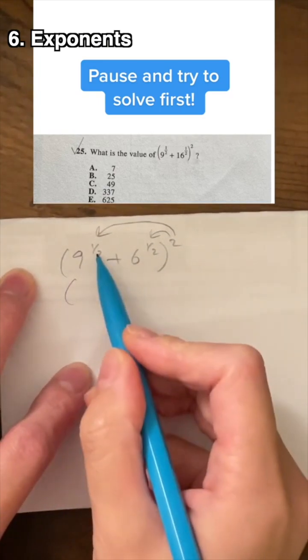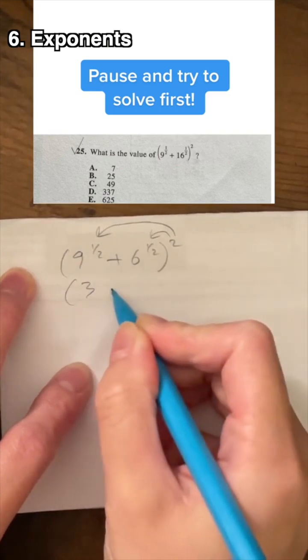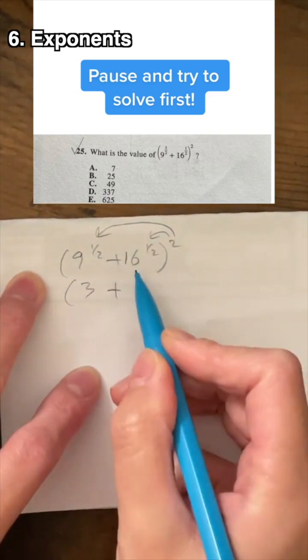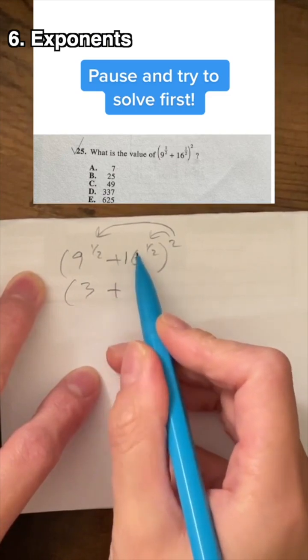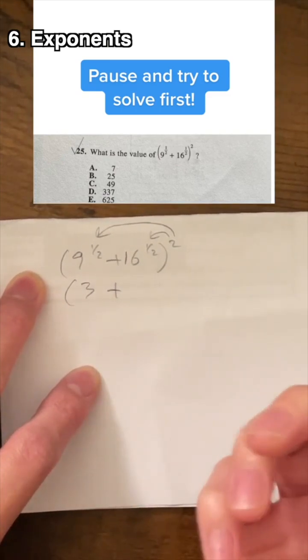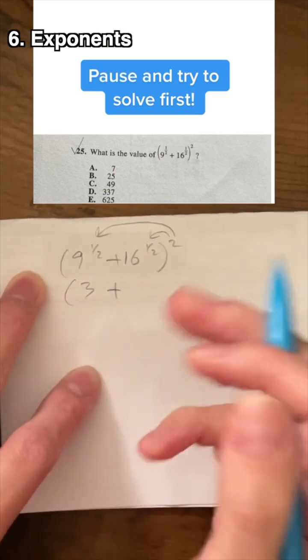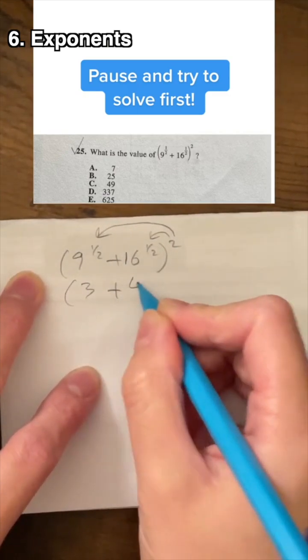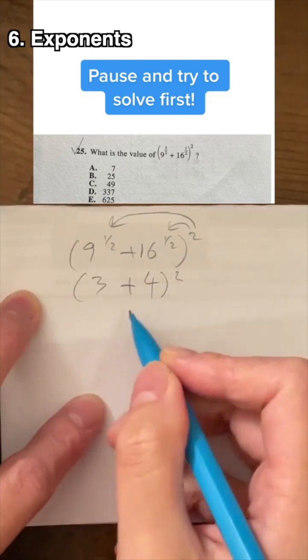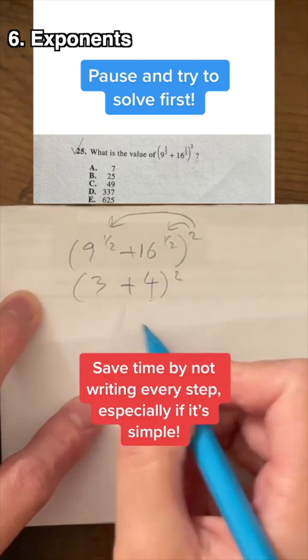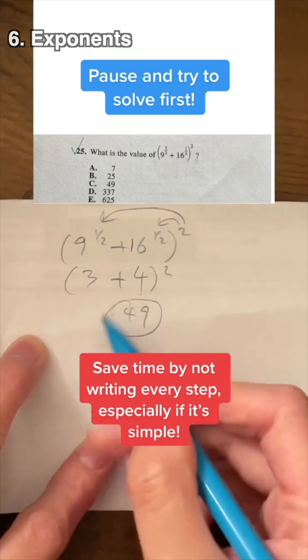Instead, note that 1 half power means square root, so this is 3. I forgot my 1 here. Note that this makes sense that they'll use 16 because the SAT, ACT will not use difficult numbers. Their problems are supposed to be relatively easy. So we have 4. Don't take time to write out the extra step. Just know that this is 7, 7 squared, and you circle your answer, which is 49.